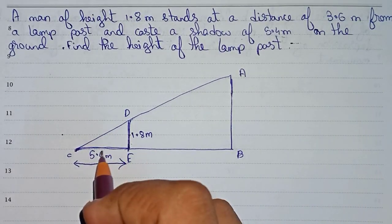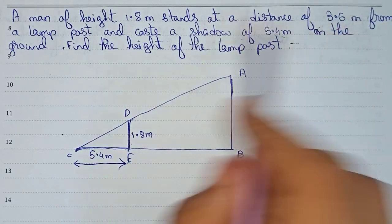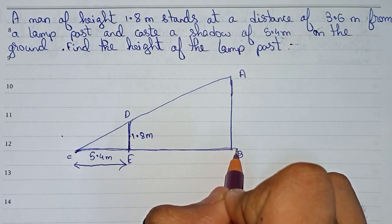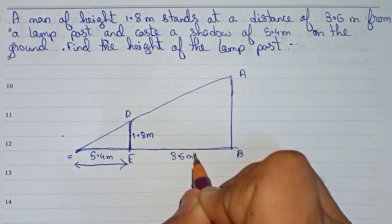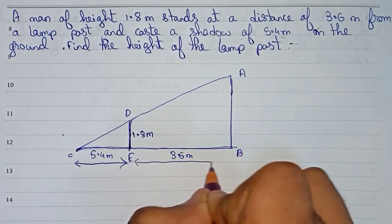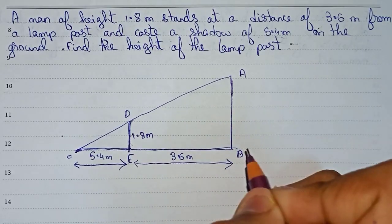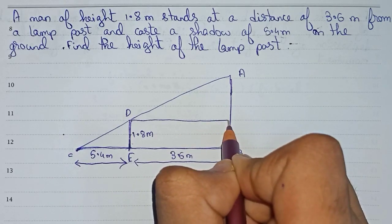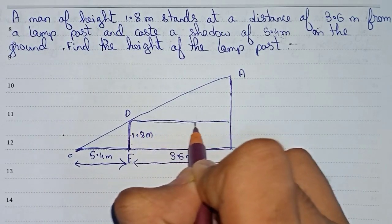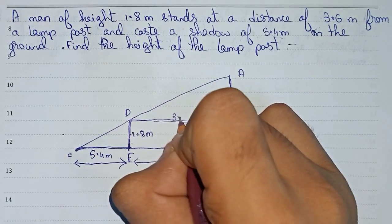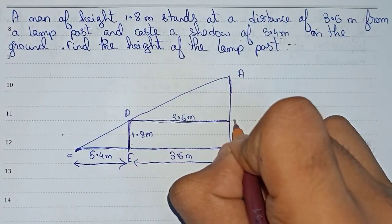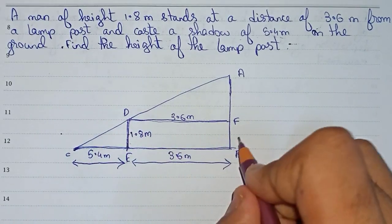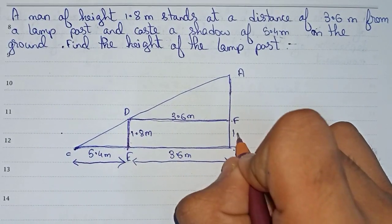It is also given that the man stands 3.6 meter from the lamp post, so this distance is 3.6 meter. If we draw a line here, this distance will also be 3.6 meter. We name this point F. Since the man's height is 1.8 meter, BF will also be 1.8 meter.